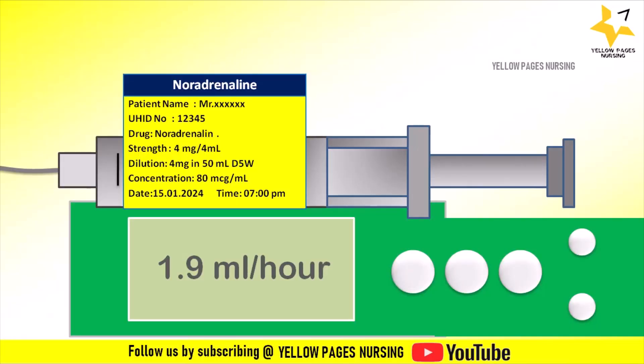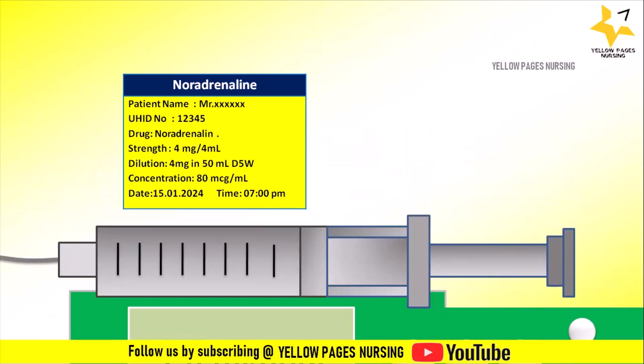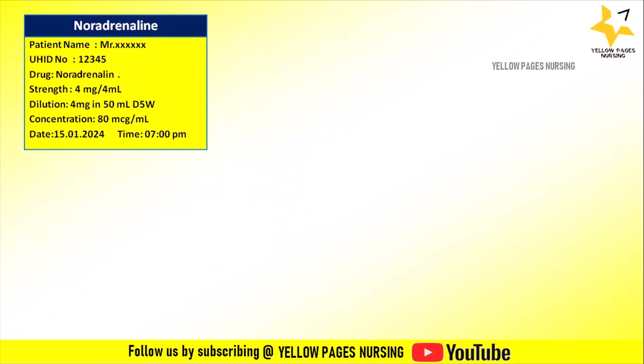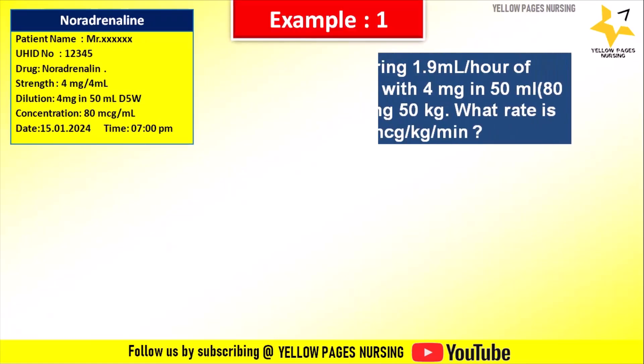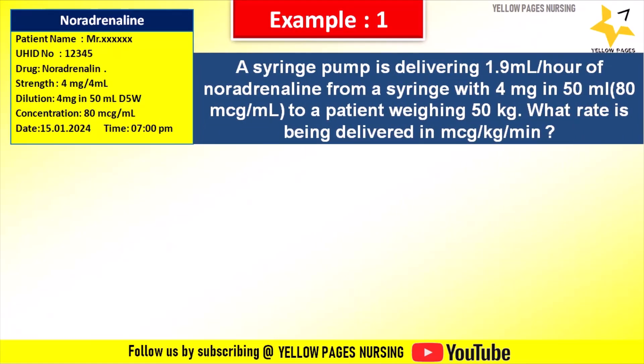Let's do the calculation step by step for the given infusion. Example 1: A syringe pump is delivering 1.9 ml per hour of noradrenaline from a syringe with 4 mg in 50 ml (80 mcg per ml) to a patient weighing 50 kg. What rate is being delivered in mcg per kg per minute?